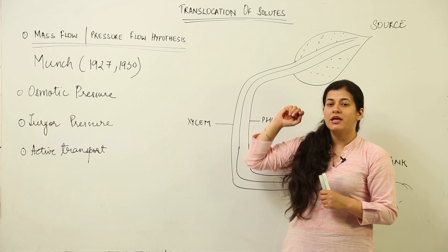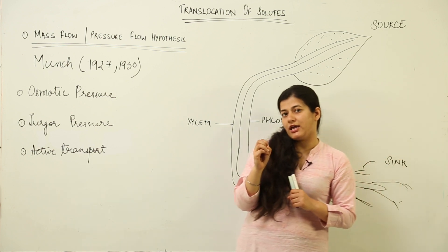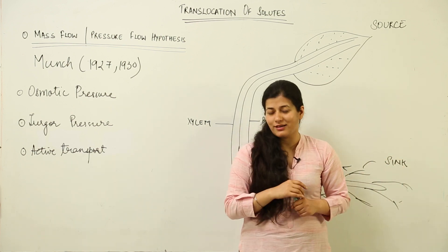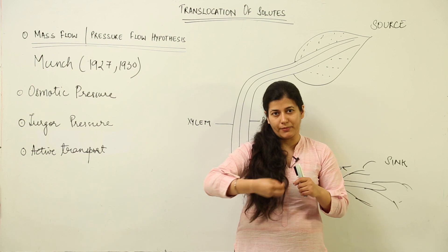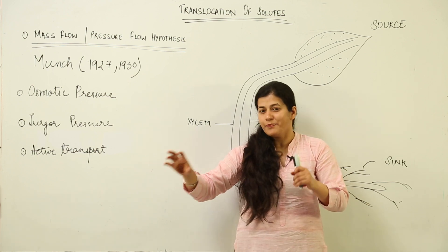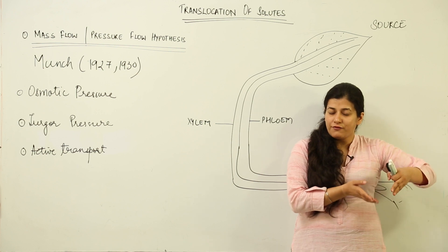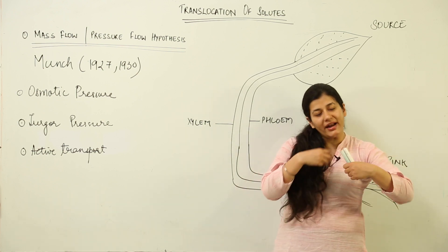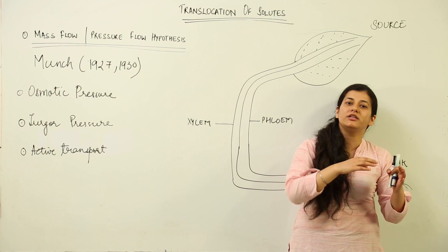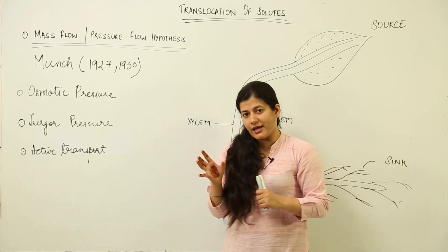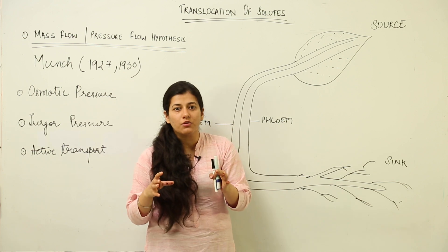To understand the translocation of solutes, when I say mass flow or pressure flow, keep in mind the analogy from your younger days — making a paper boat that flows automatically with the water. In the same way, in mass flow, the fluid moves under pressure from one place to another, and the solutes take advantage of that flow, just like a boat flowing on its own without external energy.